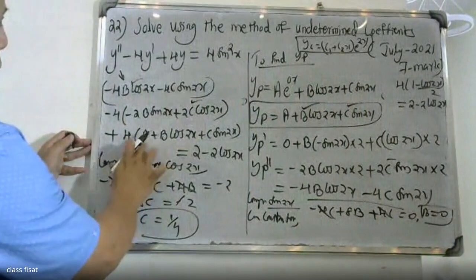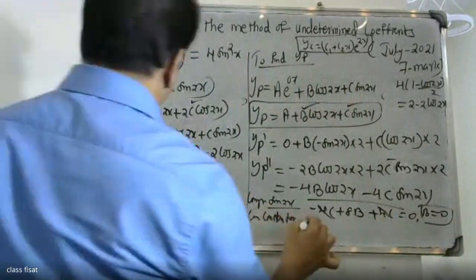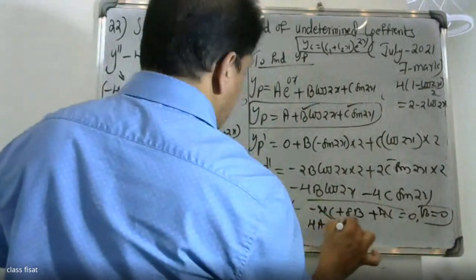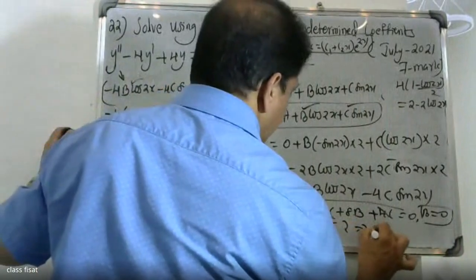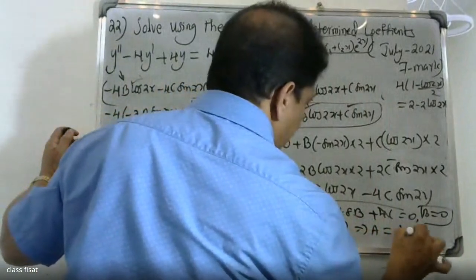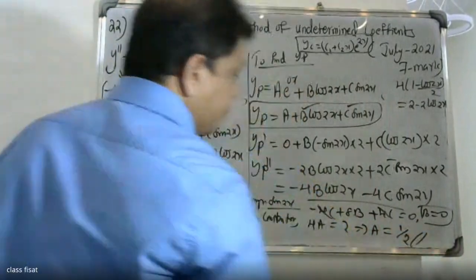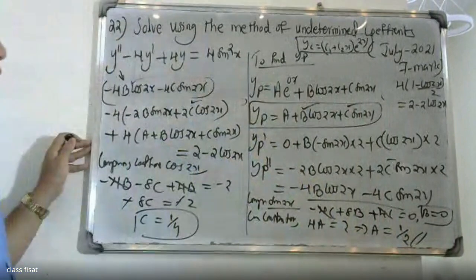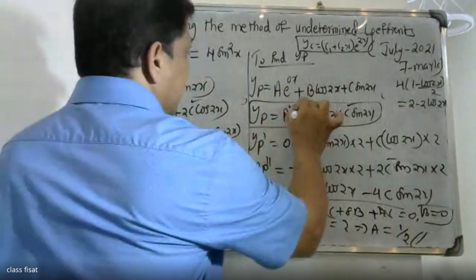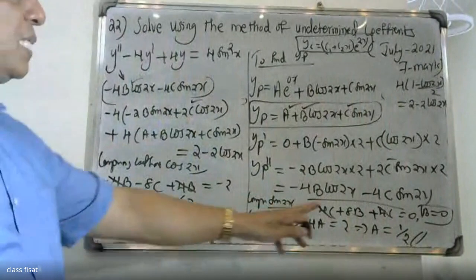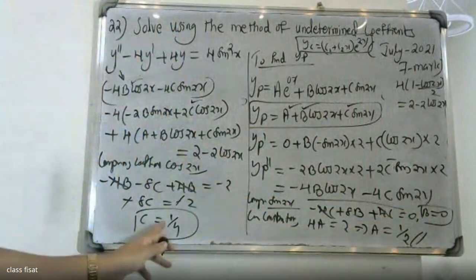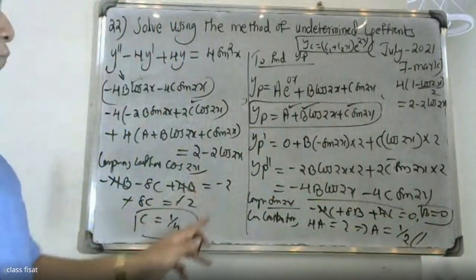Comparing constant terms: 4A = 2, therefore A = 2/4 = 1/2. So A = 1/2, B = 0, C = 1/4.